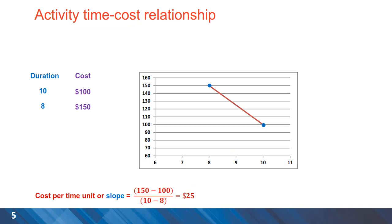Important concept in here is the relationship between time and cost for different activities. An example activity with normal duration of 10 days with normal cost of $100 and then when the duration is reduced to 8 the cost is increased to $150. Because of overtime and dedication of more resources, we can calculate the slope for the two instances and the cost per time unit is calculated to be $25.